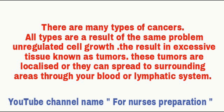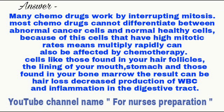There are many types of cancers. All types are a result of the same problem: unregulated cell growth, resulting in excessive tissue known as tumors. These tumors are localized, or they can spread to surrounding areas through the blood or lymphatic system. Many chemo drugs work by interrupting mitosis.